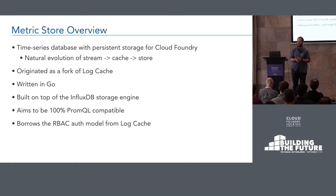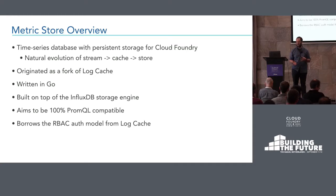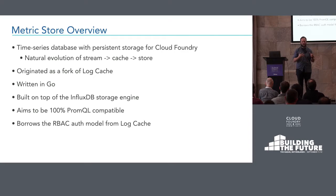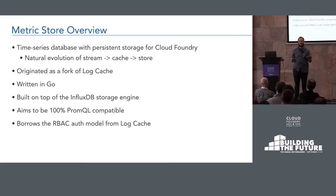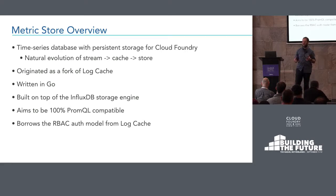So what is Metric Store? It's a time series database with persistent storage. Unlike LogCache, which I'll talk about in a second, it actually stores data on disk, is durable between restarts, and lets you take all the metrics coming through your system and store them so you can query them over long periods of time. If you've been using Cloud Foundry for a while, you've seen the evolution that led up to this — initially there was just the firehose, and you had to be listening with a nozzle or CLI tool. About a year and a half ago we started working on LogCache, which gave you the ability to cache things for shorter durations, but it still wasn't durable. About a year ago, we took feedback from LogCache users who wanted more duration for their metrics, and started making that same design persistent. That codebase has become Metric Store.